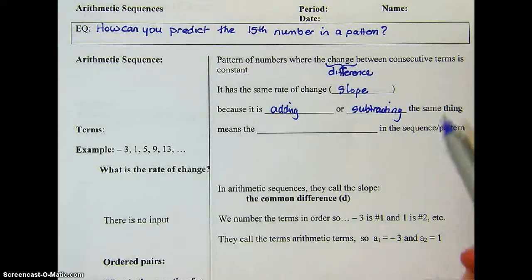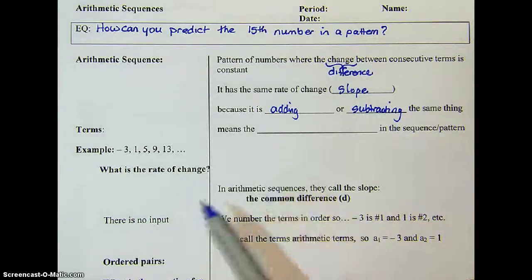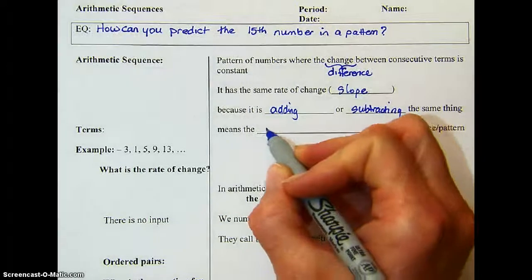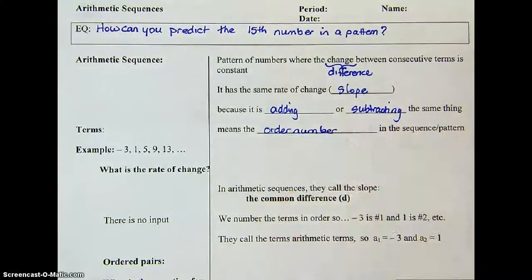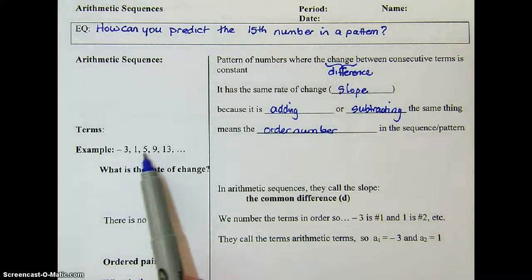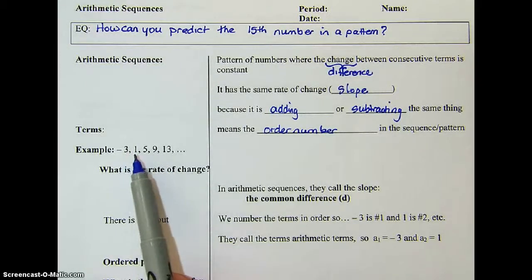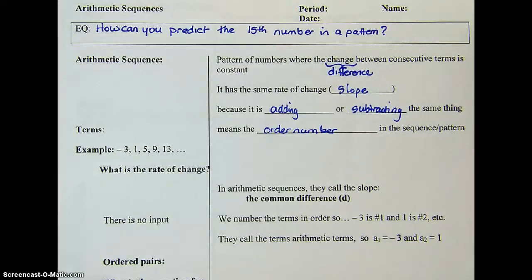They also use a thing called terms here. The term is the order number of the number in your pattern. So if you look at the example, these are the pattern values — this would be the first term, the second term, the third term, the fourth term, the fifth term. It's just what's the order number.